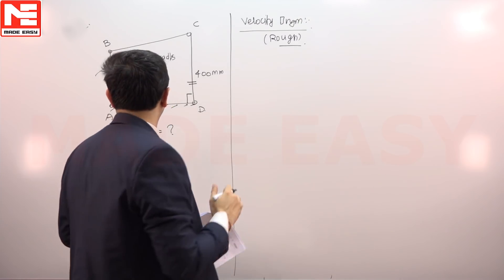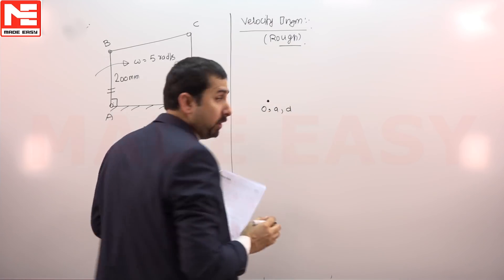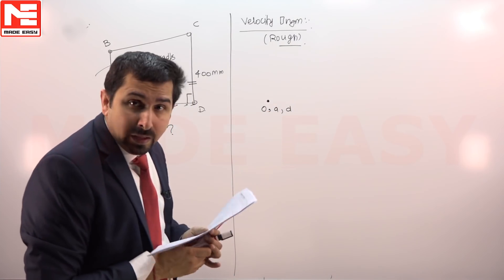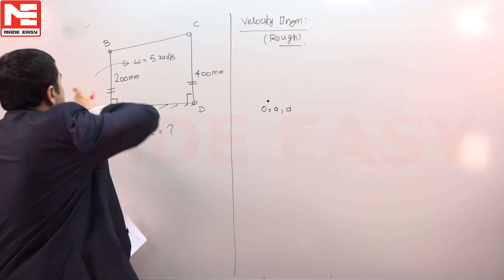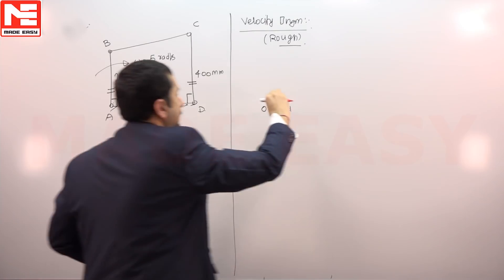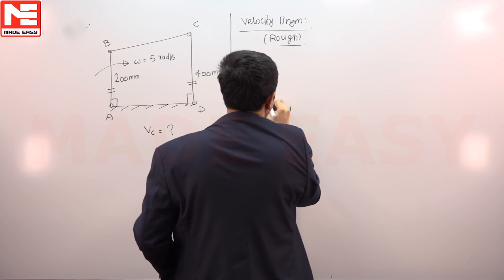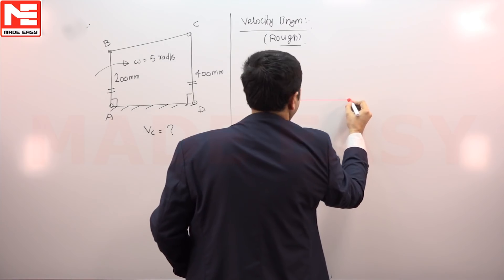If we are going to plot its velocity diagram, look at the point - point O. A and B will be the same because every fixed point will be represented by point O. Then AB is moving clockwise to B. Velocity with respect to A will be perpendicular to the link AB, so we will plot a line perpendicular to link AB. Somewhere here point B will come.